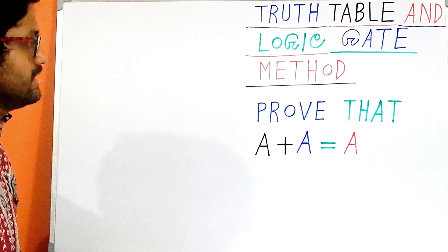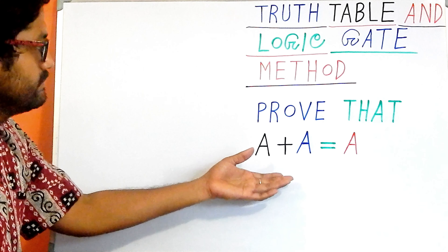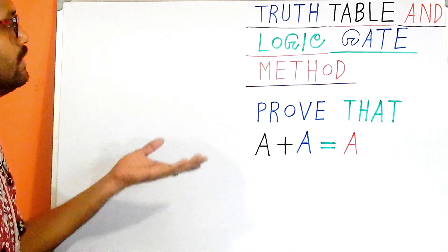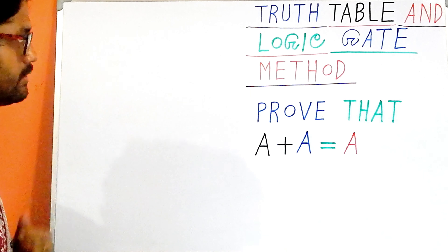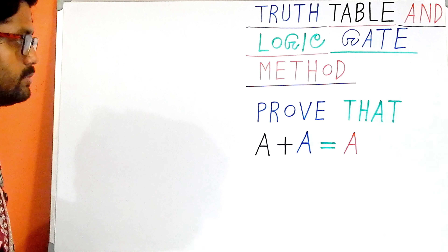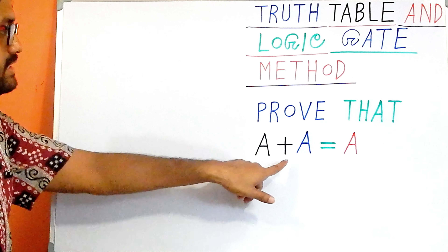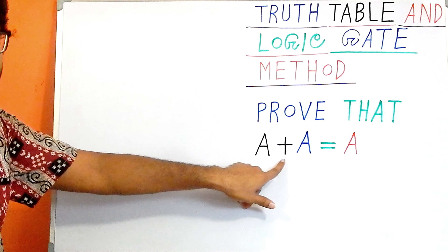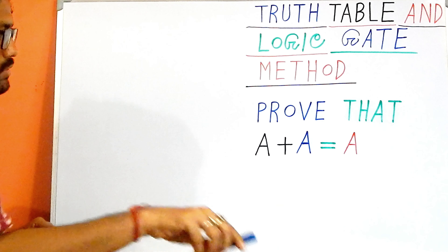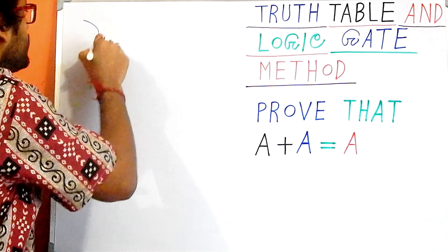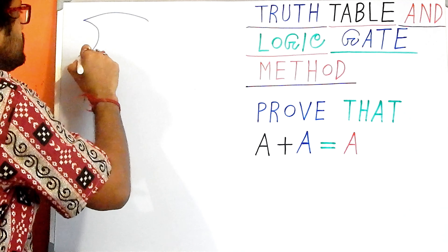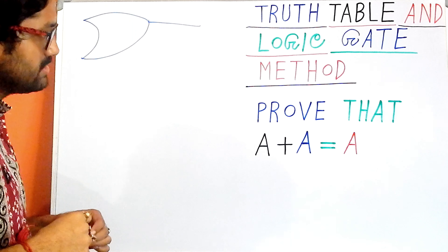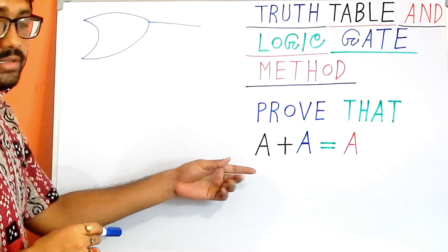Hi, we are Indian Brothers and this is another expression that we are aiming to prove, using our truth table and the logic gate analogy. Looking at this symbol, I can see that this one is our OR gate, so I just need to draw the OR gate first.